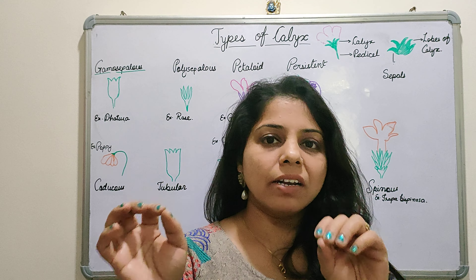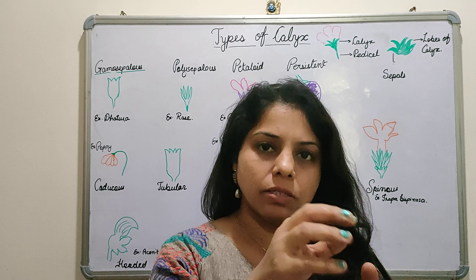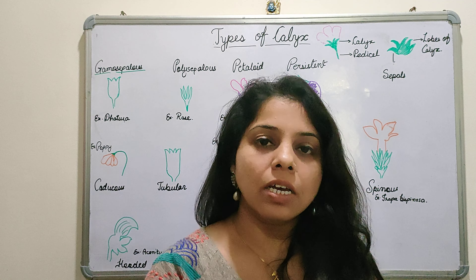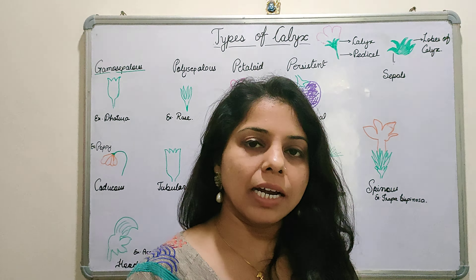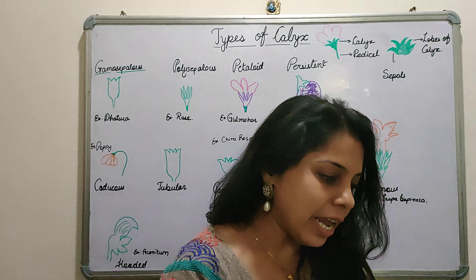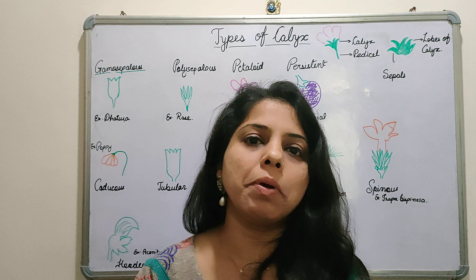So 'lobes of calyx' is a term which is linked to calyx in some conditions and some cases. We don't get to see this in all conditions, but we do see it in certain cases. This should be clear to you — it is a term I have not covered in previous lectures.